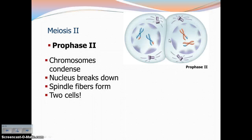After meiosis I, sometimes cells go through cytokinesis, sometimes they don't — it really depends on the type of cell. But either way, they're going to go into meiosis II. Same order: prophase, metaphase, anaphase, telophase. In prophase II, we have the chromosomes condensing again, the chromosomes forming, the nucleus breaking down, the spindle fibers forming — really the same thing that happens in prophase of mitosis. The only difference is that now we're doing this in two cells instead of one.